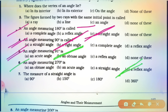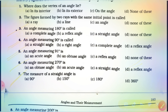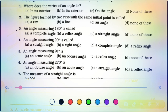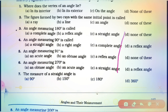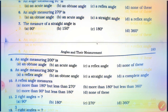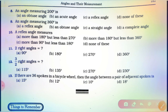Now, students, proceed to question number 7. The measure of a straight angle — you know, a straight angle's measurement is 180 degrees. Clear, students? Now, proceed to question number 8. In question number 8, observe: an angle measuring 200 degrees. As you know, more than 180 degrees but less than 360 degrees is known as a reflex angle. So, students, C number option is correct.